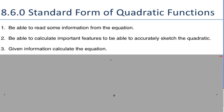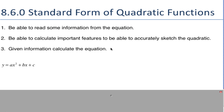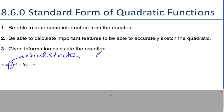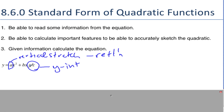We're all about the standard form of the quadratic function, which looks like this. From this equation, there are a couple things you already know. The a value is the same a value that was in factored form and vertex form — it tells us the vertical stretch, or if it's negative, a reflection. The other helpful value is c, which is the y-intercept, because if you put x equal to zero, you get c.